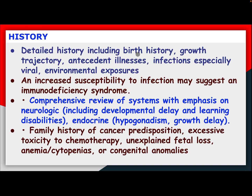Detailed history includes birth history, growth trajectory, antecedent illness, infection especially viral, and environmental exposure. Increased susceptibility to infection may suggest an immune deficiency syndrome. Comprehensive review of systems with emphasis on neurological findings including developmental delay and learning disability, endocrine findings like hypogonadism and growth delay, and other system review.